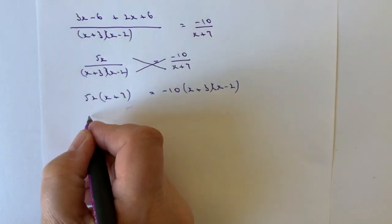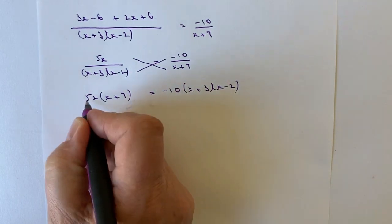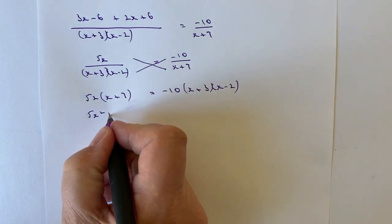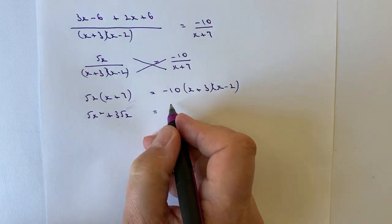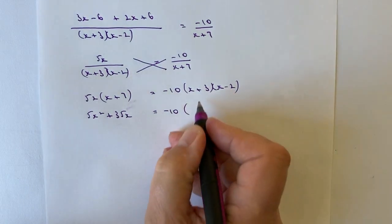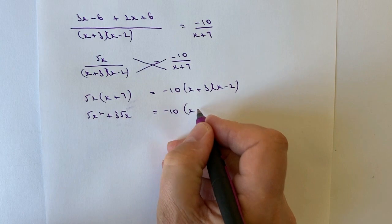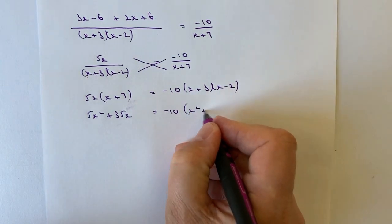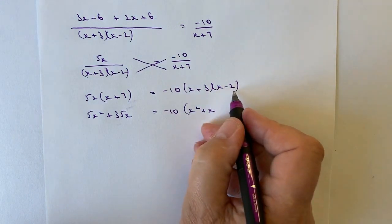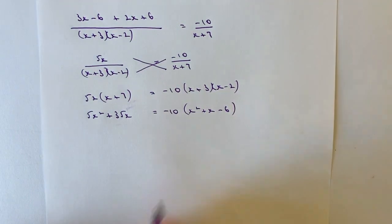5x times x is going to be 5x squared. 5x times plus 7 is plus 35x. Equals minus 10, and I've got x times x is x squared. Minus 2x plus 3x is plus x. And then plus 3 times minus 2 is minus 6.